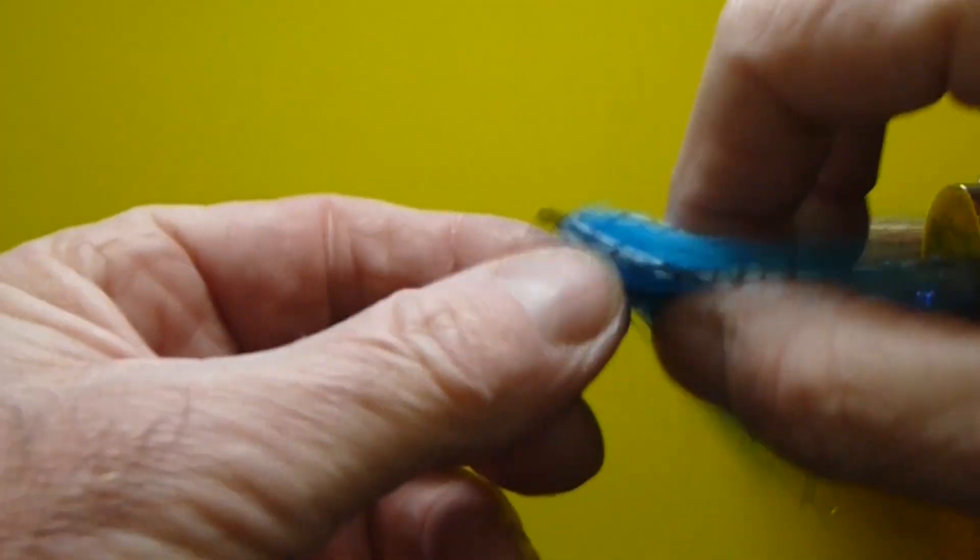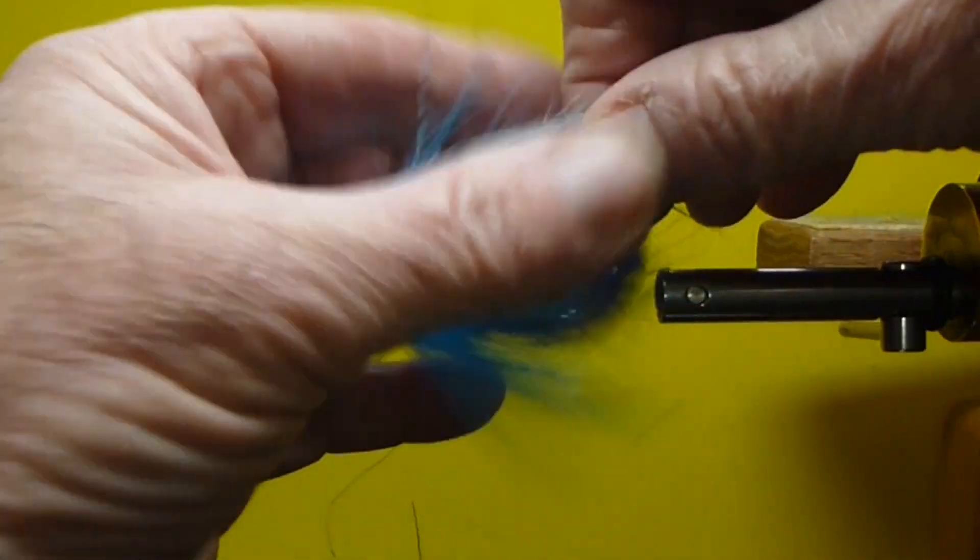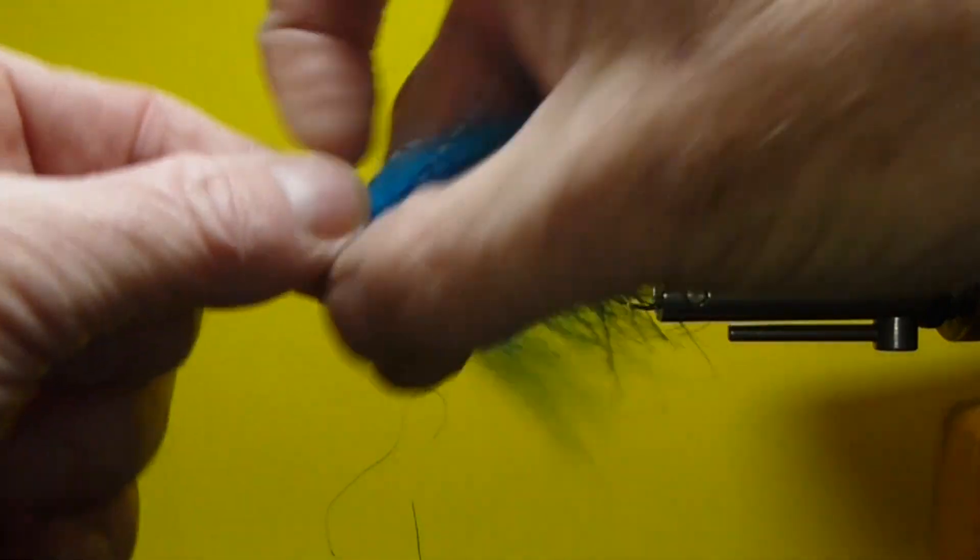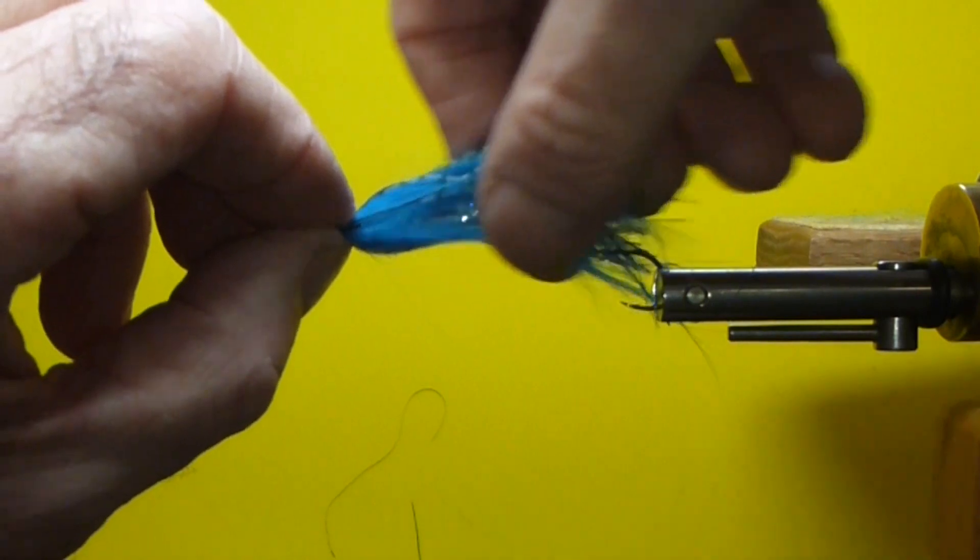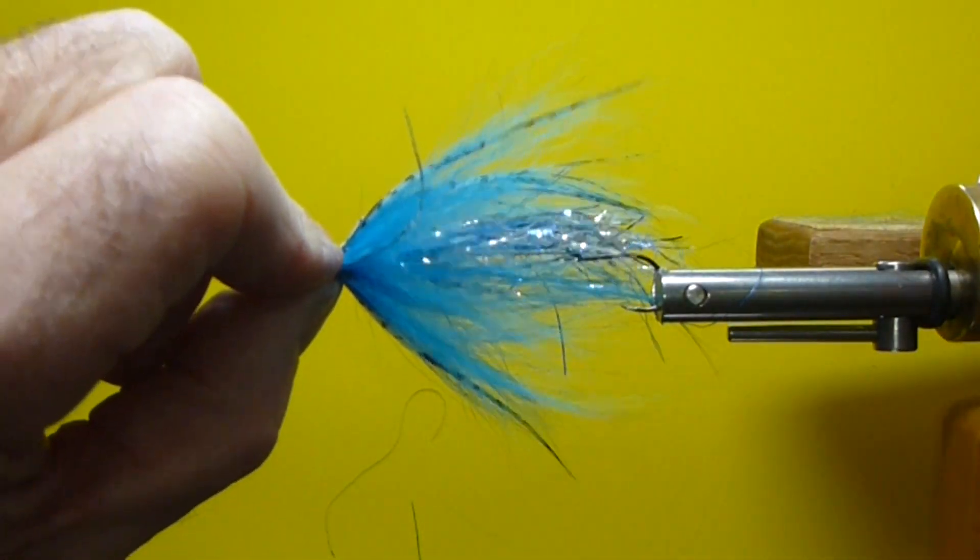There we go. Nice little Foxy Enticer. And it's a great little, I'll just stick that in here so I can handle it. And it moves very well in the water. And I've caught a lot of fish with it. I've sold a lot of these to different fellows and they've been very happy with it.